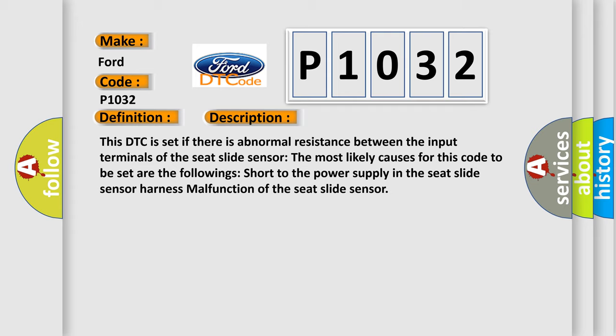This DTC is set if there is abnormal resistance between the input terminals of the seat slide sensor. The most likely causes for this code to be set are short to the power supply in the seat slide sensor harness or malfunction of the seat slide sensor.